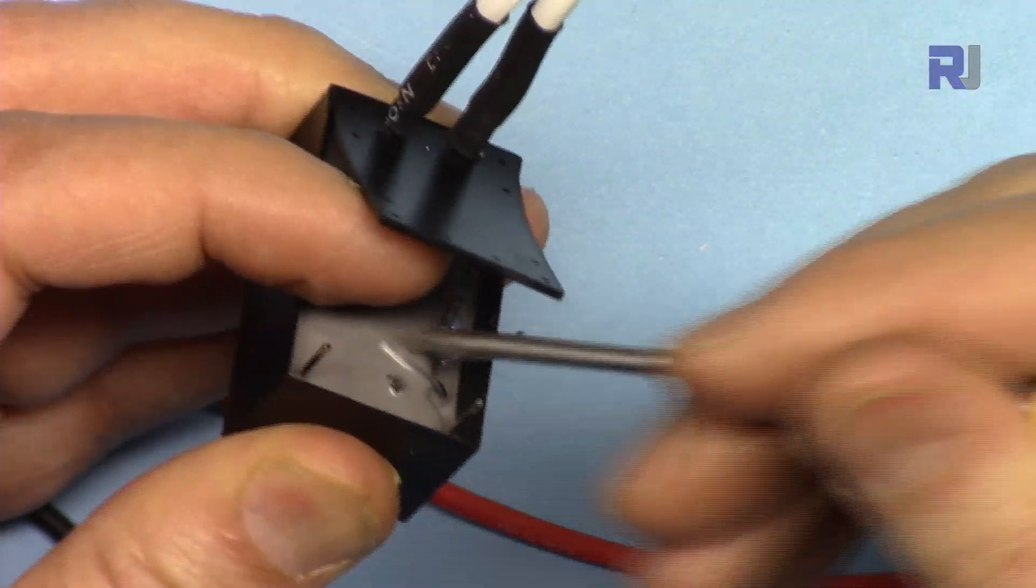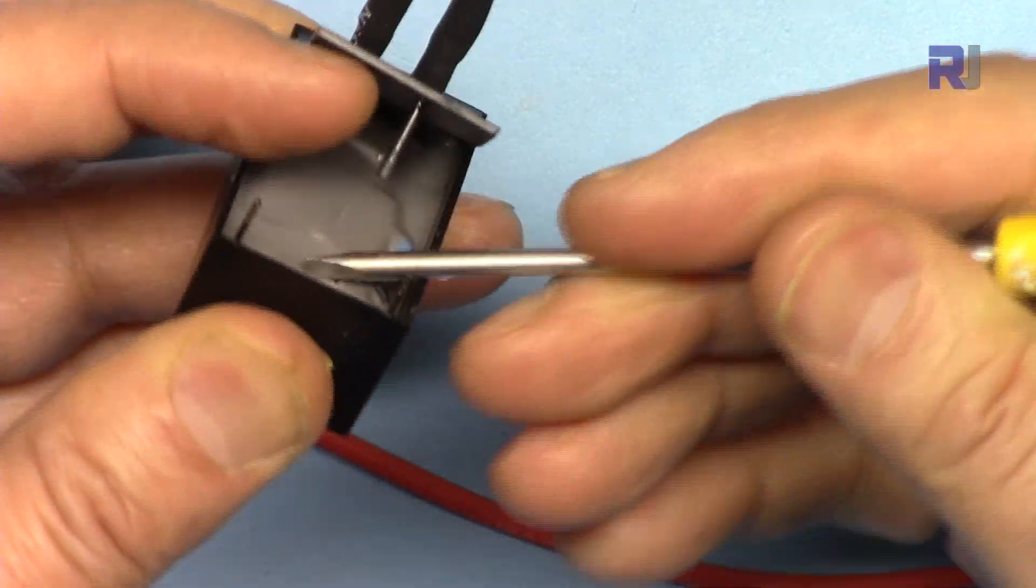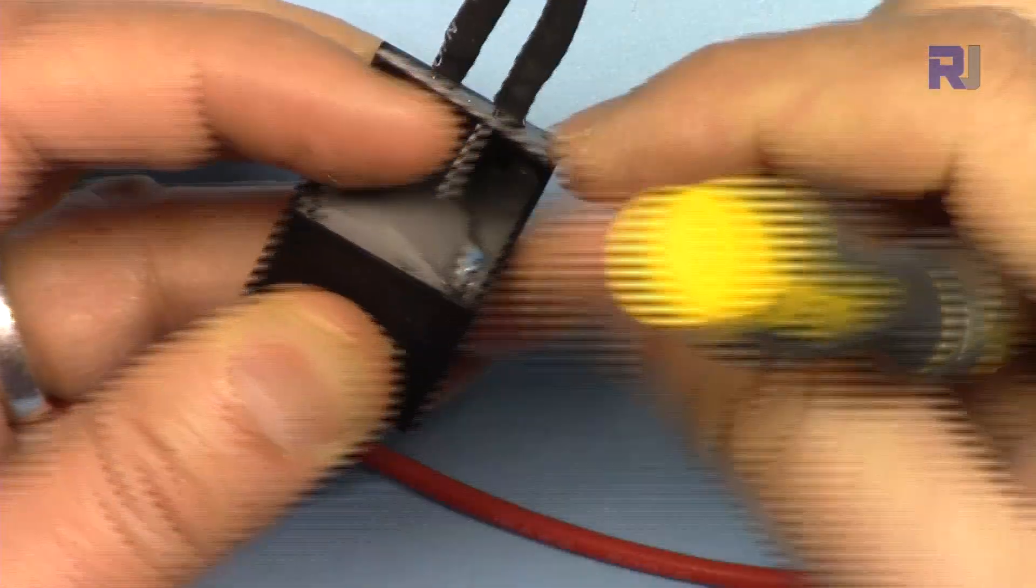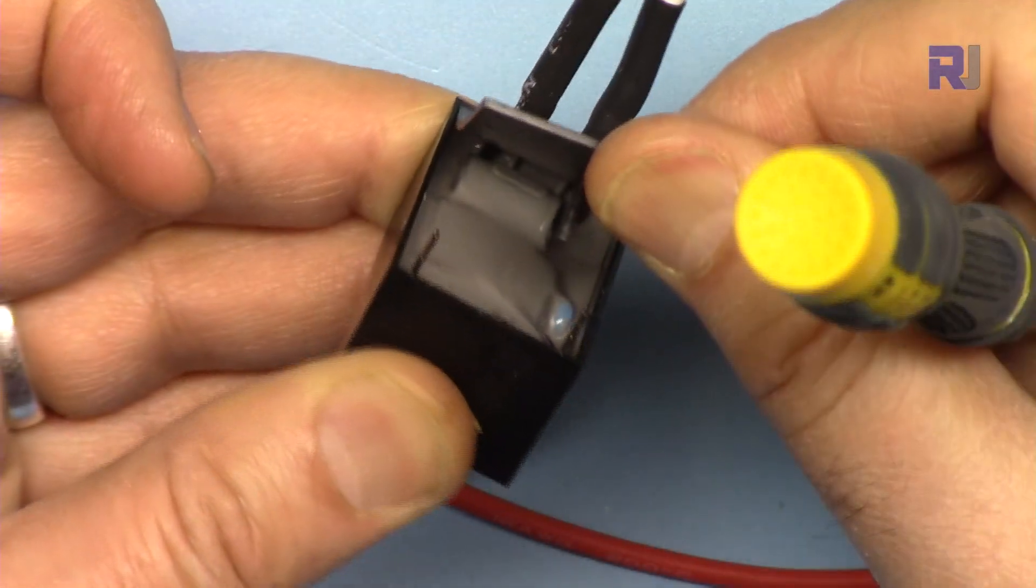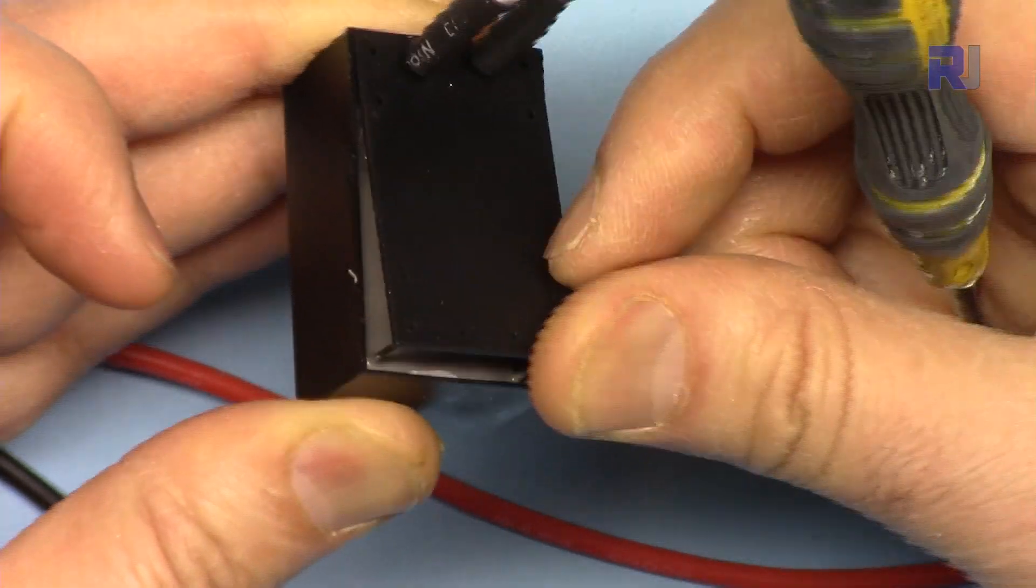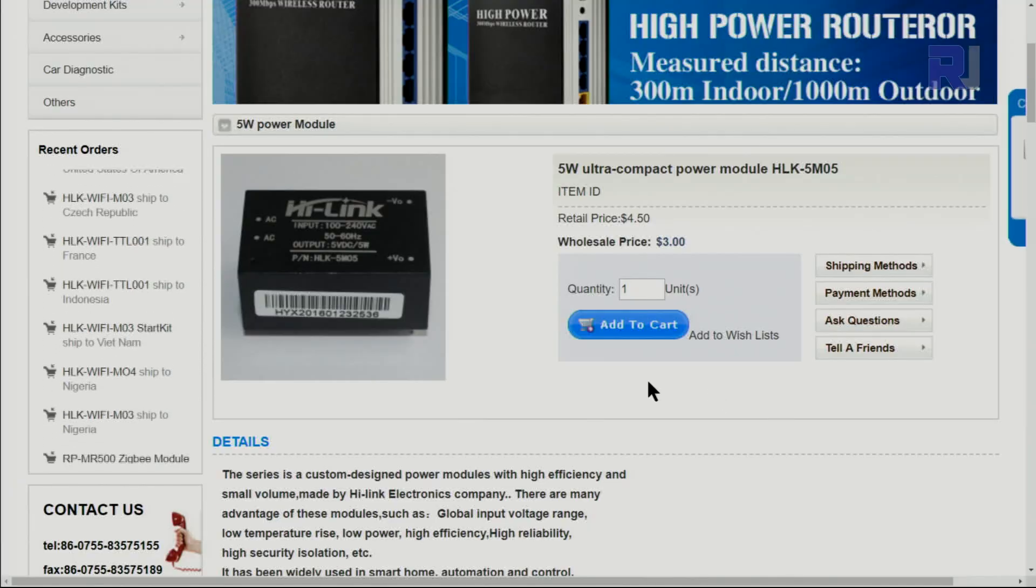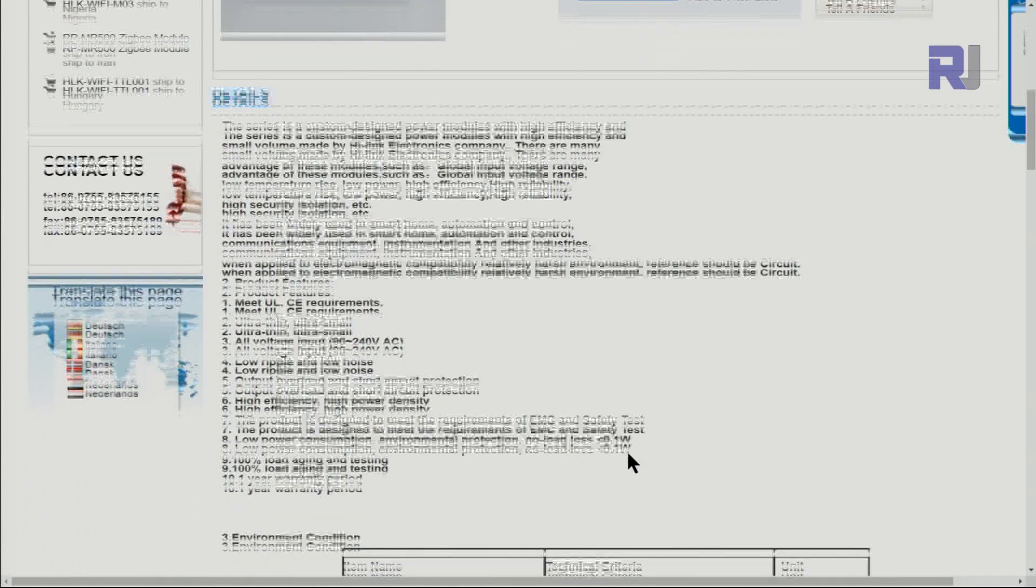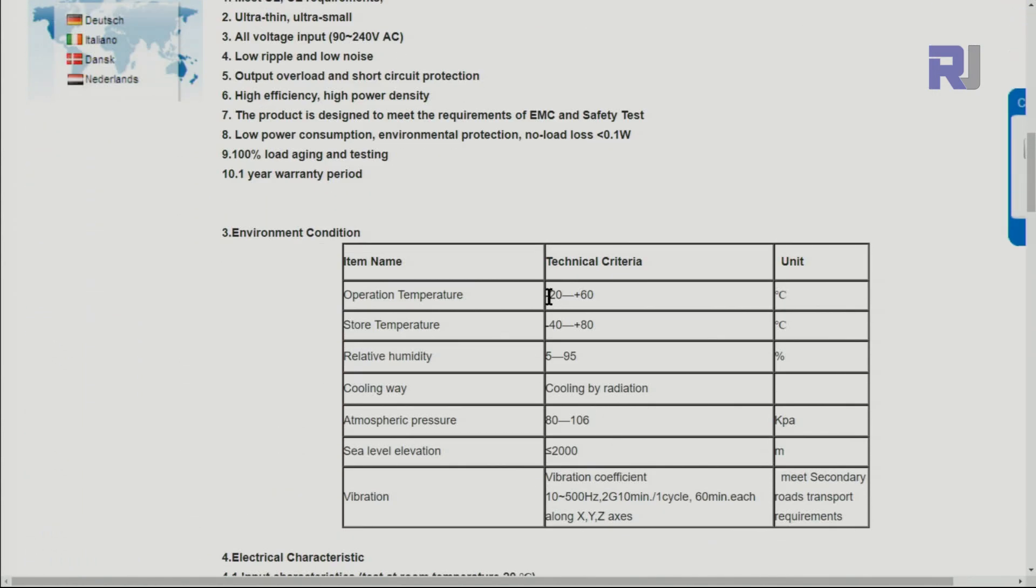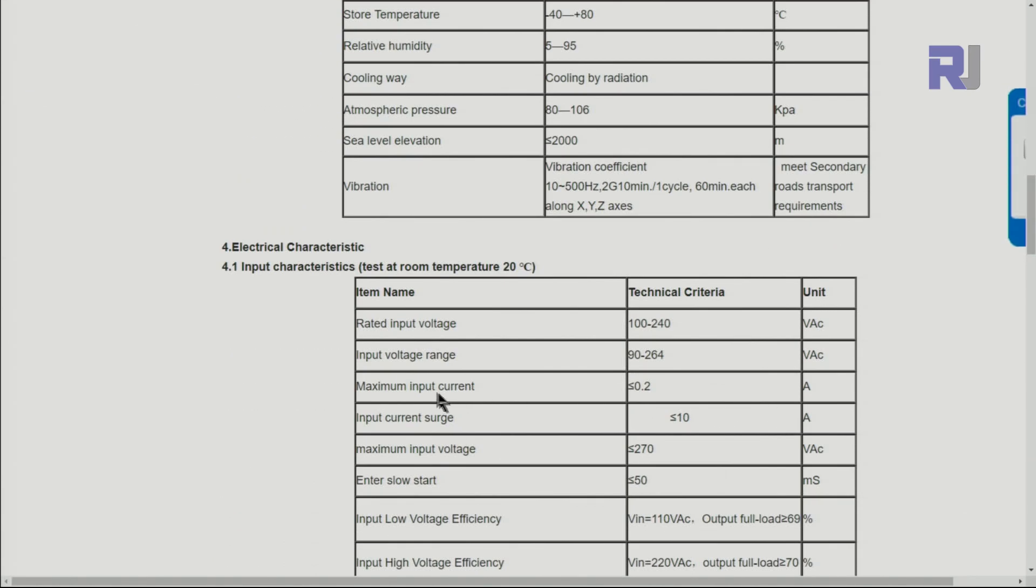Even if I open it, they put glue here and all the components are glued together so we won't be able to see it. On the data sheet the operating temperature is minus 20 degrees to plus 60 degrees Celsius, and maximum input current in terms of AC is less than 0.2 ampere. Inrush rate is less than 50 milliseconds.